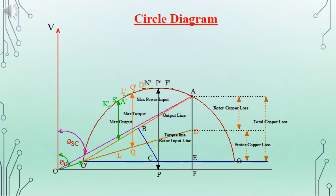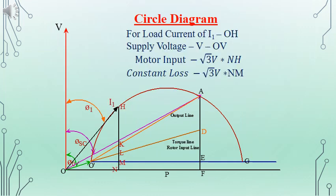The entire circle diagram is shown, including stator and rotor copper losses, the total copper loss, the torque line, and the output line. From this diagram we can find the maximum power input, the maximum power output, and the maximum torque. We will now consider an example for which the load current is given as I1.